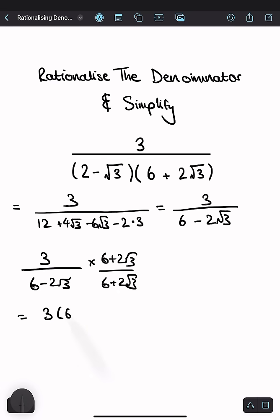You get 3 times 6 plus 2√3 divided by 6 minus 2√3 times 6 plus 2√3.